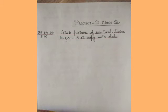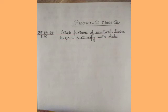Children, in your SST copy what you have to do, you have to paste a picture of identical twins. Now what are identical twins? Children, those who look alike, those who look exactly the same. So you have to stick the picture of identical twins in your SST fair copy.